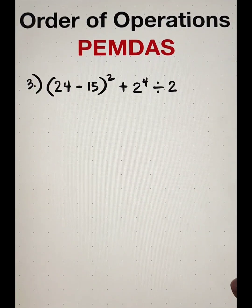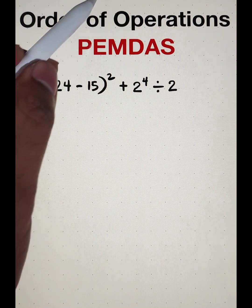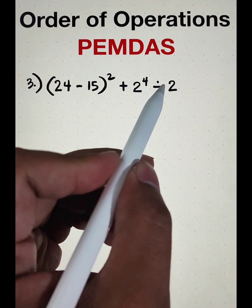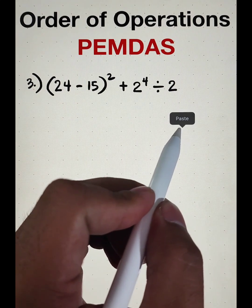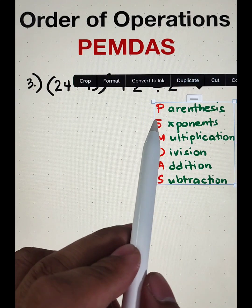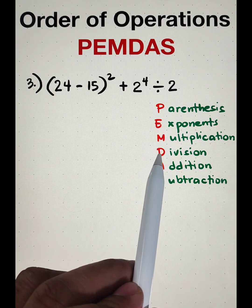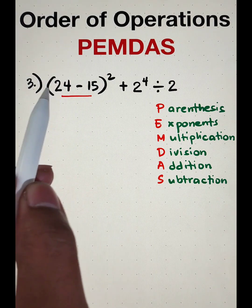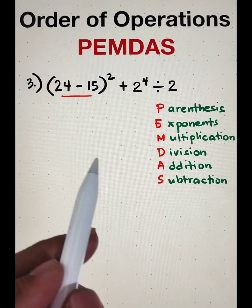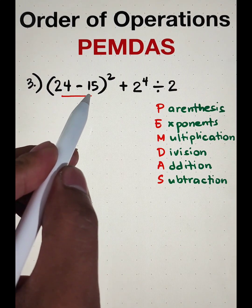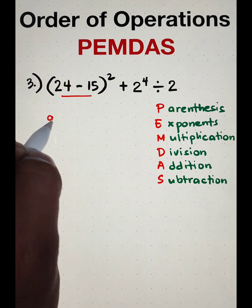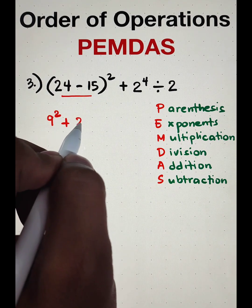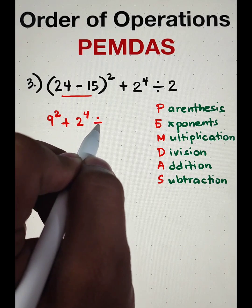Now, let's continue with item number 3. So, what we have here is the quantity of 24 minus 15 squared plus 2 raised to the 4th power divided by 2. But before we do this, let me remind you the arrangement of our PEMDAS. We have the parentheses, exponent, multiplication, division, addition, and subtraction. So, let's get started. First, we need to accomplish 24 minus 15 because this one is inside the parentheses. 24 minus 15 is equal to 9. And then attach the exponent of 2, copy plus 2 raised to the 4th power divided by 2.